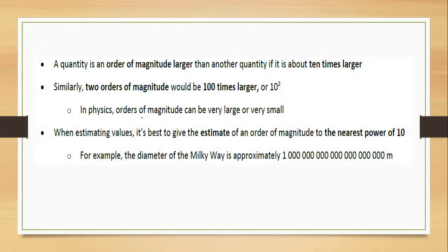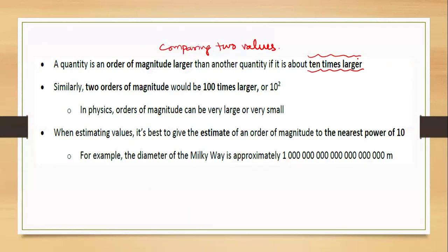If a quantity is an order of magnitude larger than another, it means it is about 10 times larger. The rule is: if there is a difference of 10 times or more, the quantities have a different order of magnitude. If the difference is less than 10, they do not. Two orders of magnitude means 100 times larger — that is 10².